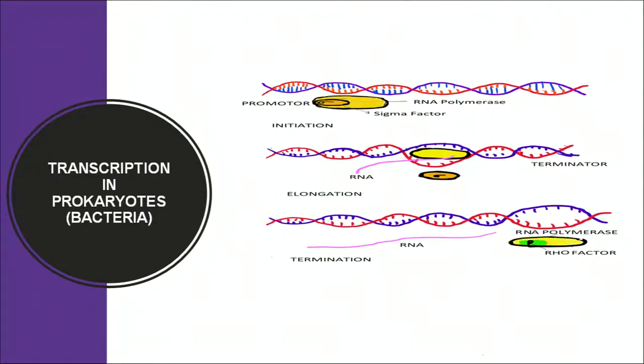In prokaryotes, translation also starts immediately along with transcription because there is no nuclear membrane present and the chromosome exists only as a nucleoid in the cytosol. So transcription and translation go side by side in the case of prokaryotes.